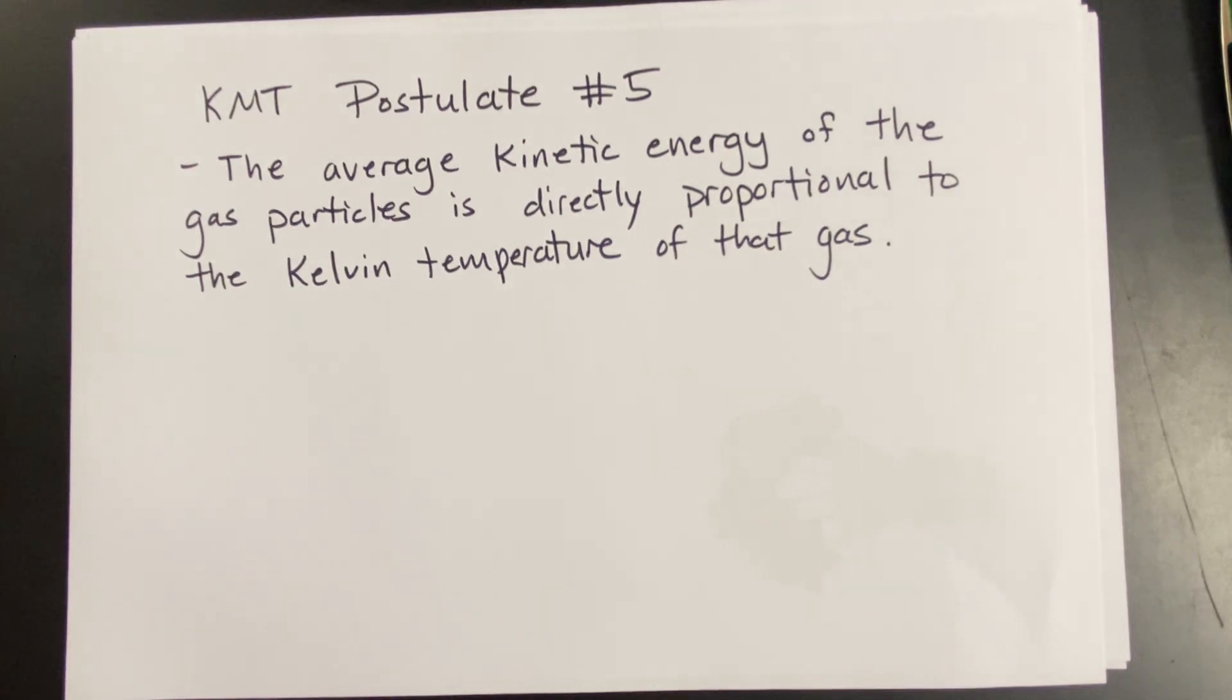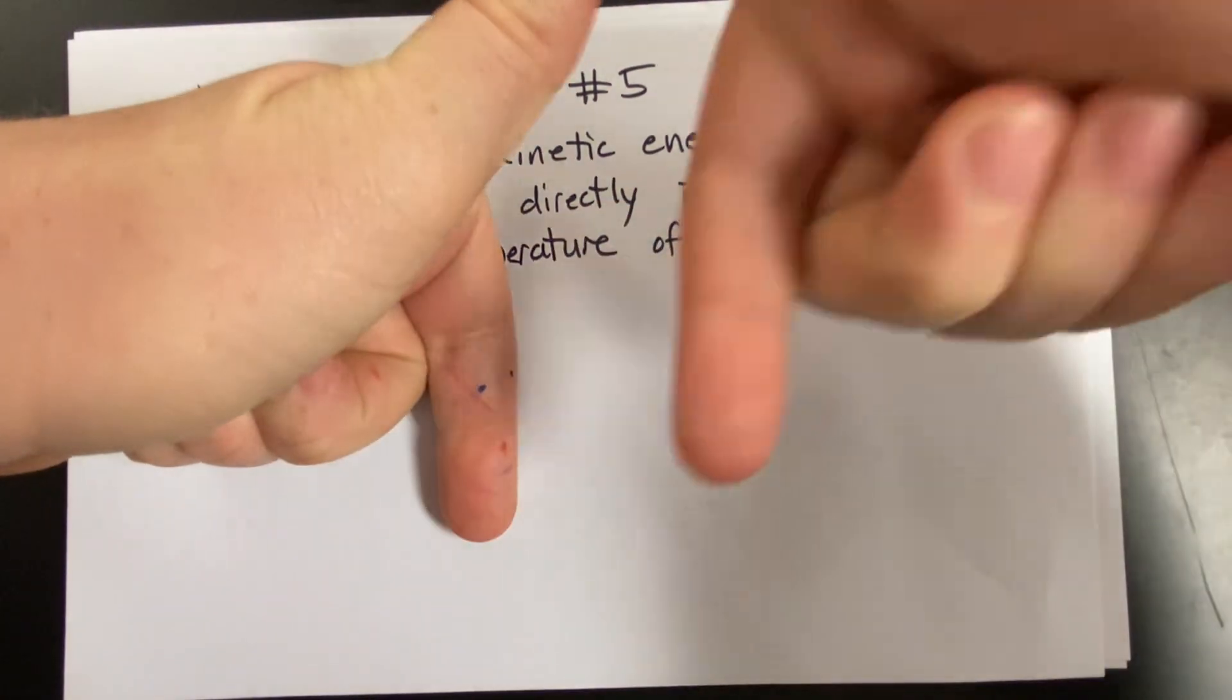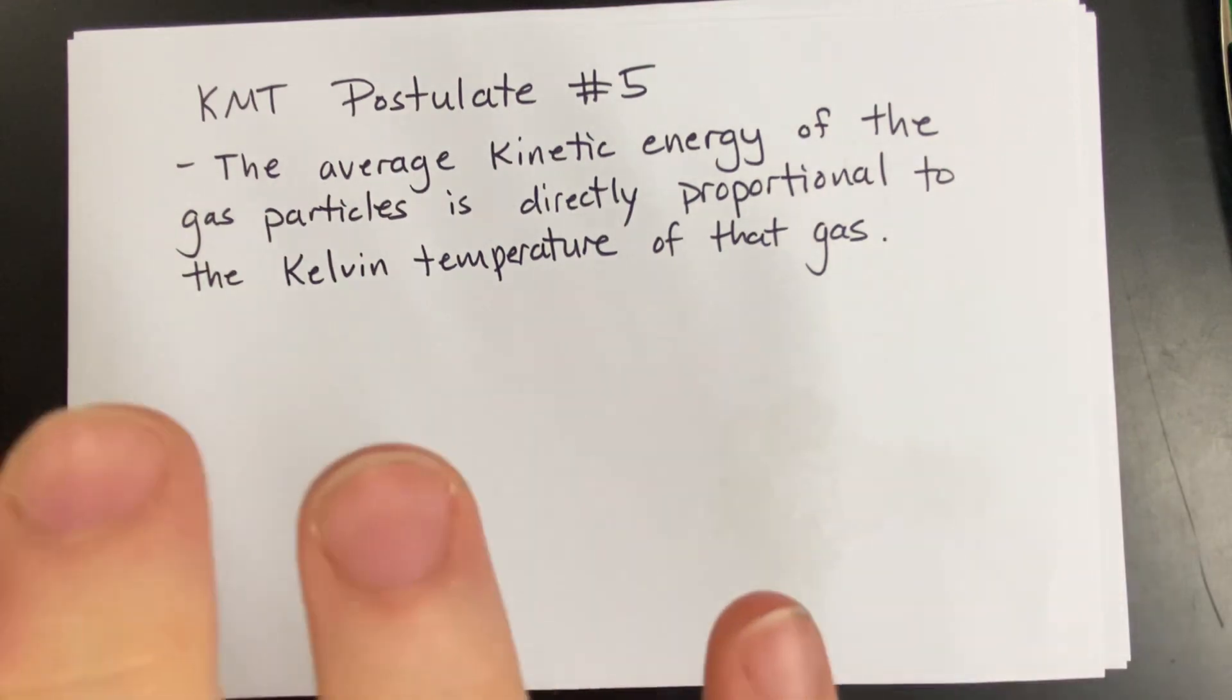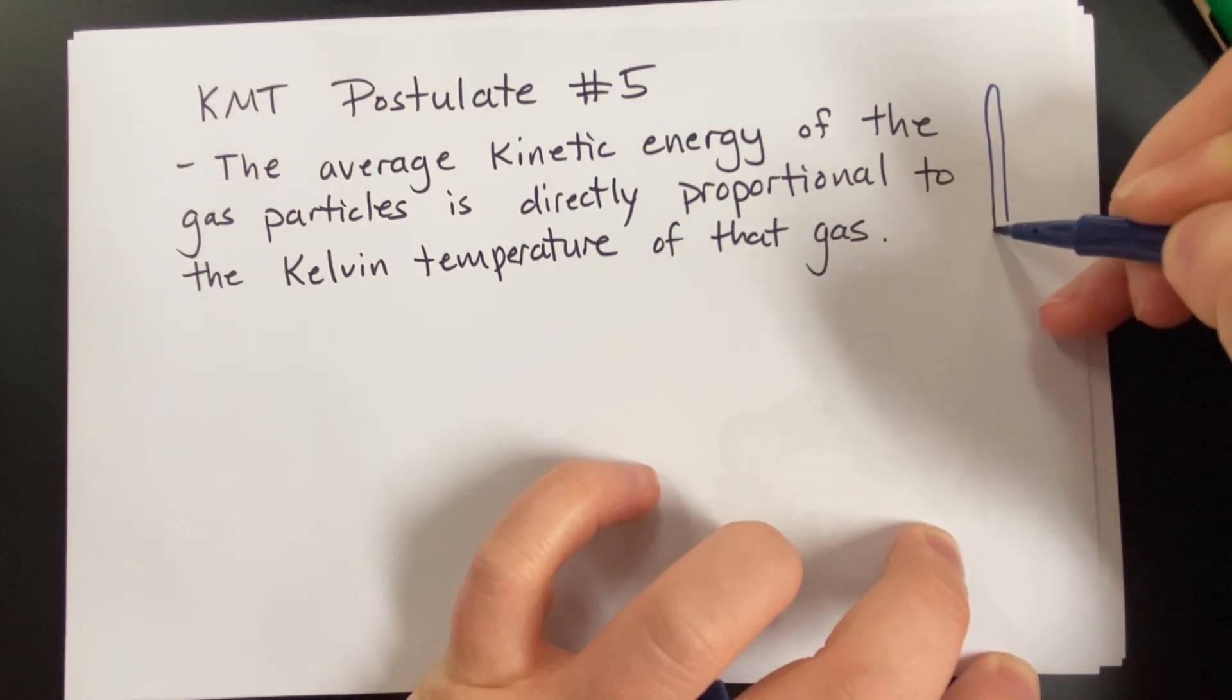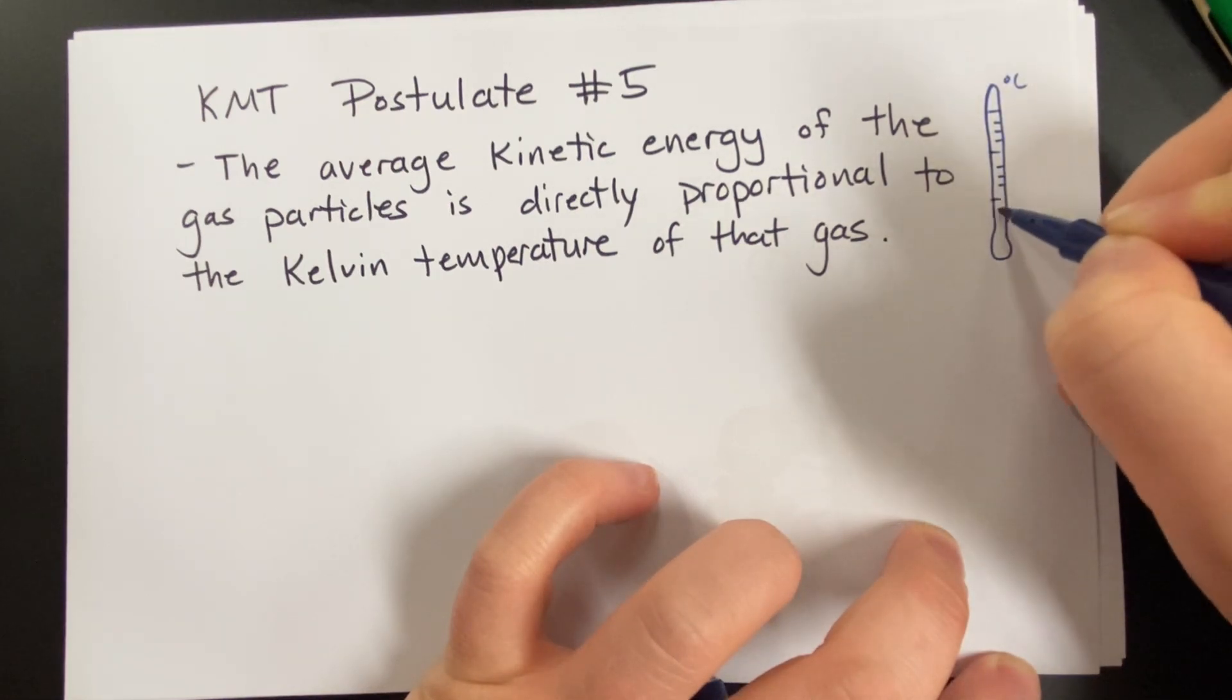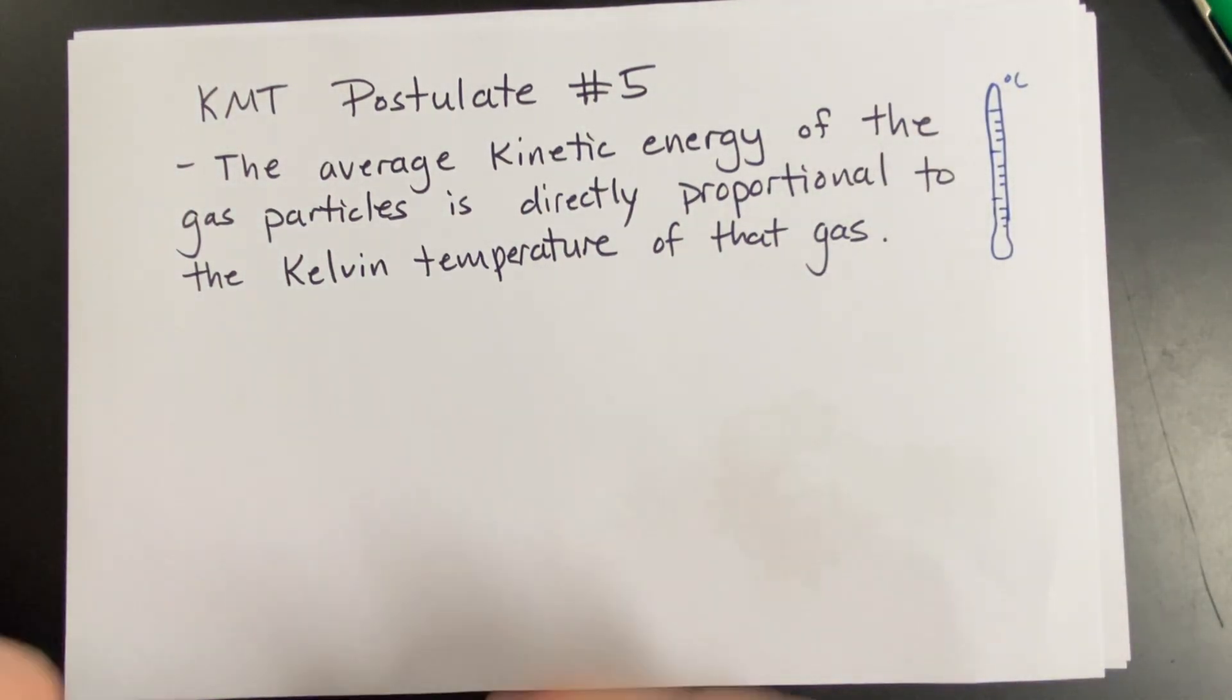All right, postulate number five. This one we actually have already had as well. It says the average kinetic energy of the gas particles is directly proportional. Remember, that means if one goes up, the other one goes up. If one goes down, the other one goes down. Directly proportional to the Kelvin temperature of that gas. This is basically defining temperature. Okay, it's defining temperature. So if you want to draw a little thermometer, that's not a very good thermometer, and whatever. Maybe it looks like a thermometer, okay? Draw a little thermometer. That's kind of the idea here.